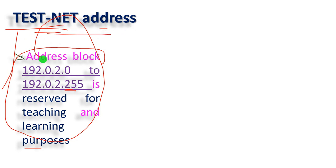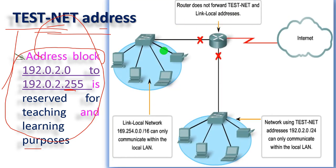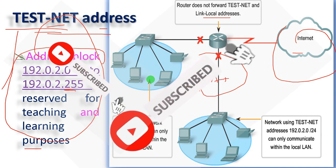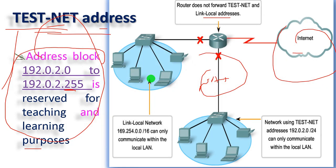Routers do not forward local link addresses because they are private and not globally routable — this is supported by Network Address Translation. So that covers public and private addresses and special IP version 4 addresses. Please like, subscribe, and share the channel. I love you guys.